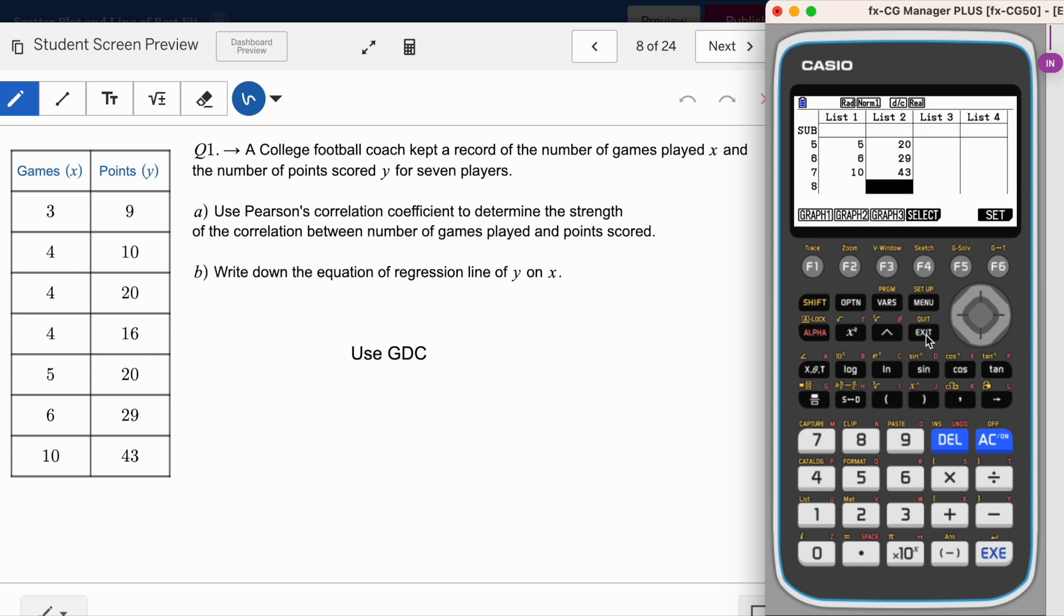Once it is okay, click exit and then go to graph. You will see the scatter plot here, the points are scattered. Now I want to calculate for the Pearson's correlation coefficient to determine the strength. I'm going to click on calculate. It is actually linear regression, so you can select the option called x. It's on F2.